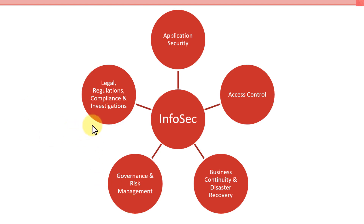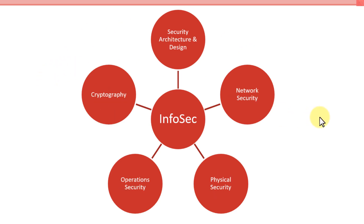The last one on this slide is legal, regulatory compliance and investigations. Whatever we do in information security, we need to make sure that we are in compliance with laws, regulations, and standards, and different types of investigations — whether they're internal or external with law enforcement. So those are the first five.